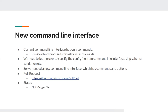Regarding the new command line interface: the current CLI only provides commands and options as plain arguments. We need to let users specify the config file from the command line, and let users skip schema validation when providing commands to Windows Service Wrapper. We needed a much more user friendly and manageable command line interface, so we started working on that and a pull request has been created. This will be merged into version 3, which we are currently working on. The status of this task is not merged yet.